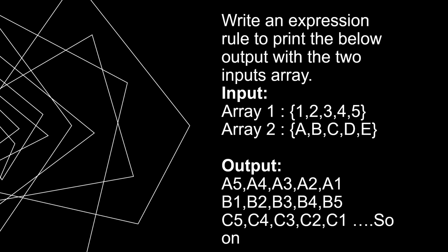Similarly, the next element b from array 2 is mapped in ascending order of array 1: b-1, b-2, b-3, b-4, b-5. Then element c is mapped again in descending order: c-5, c-4, c-3, c-2, c-1, and so on. Drop a comment if you get stuck and we will provide the answers in the upcoming videos.